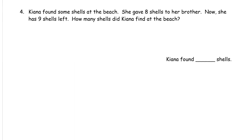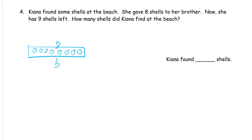How many shells did Kiana find at the beach? She found shells at the beach — we don't know how many that is. We know that she gave 8 to her brother and that she had 9 left. So we know those are the parts, but we don't know what the whole is. Let's draw the parts and count them to find out the whole. There are 8 that she gave to her brother — 1 through 8. Then she has 9 left, and I'm going to draw these filled in so they look different — 1 through 9. Put them on a piece of tape.